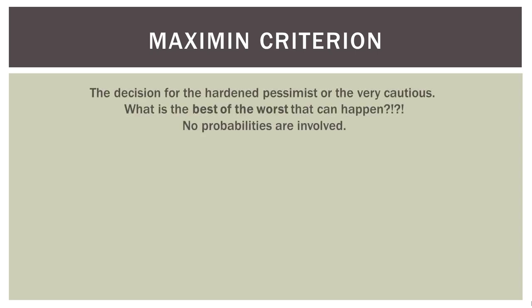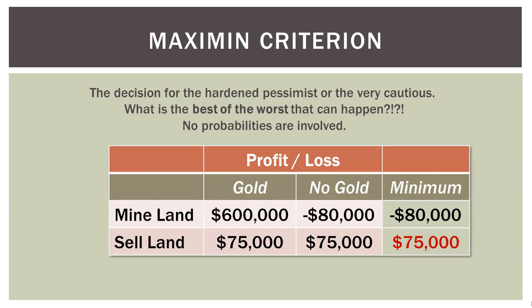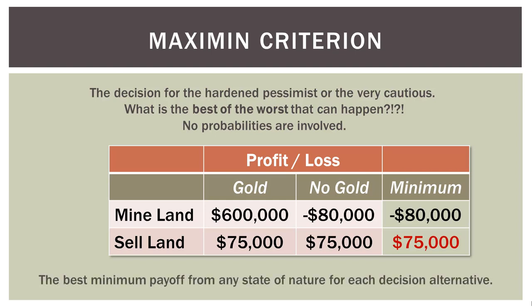Next is the Maxi-Min Criterion — this is for the hardened pessimist or the very cautious. What is the best of the worst that can happen? No probabilities are involved. The worst outcome for mining the land is losing $80,000 if there's no gold. For selling the land, the worst that could happen is $75,000 — which is also the best that could happen. The best of those worst outcomes is to sell the land. So the Maxi-Min is simply the best minimum payoff — the best of the worst.